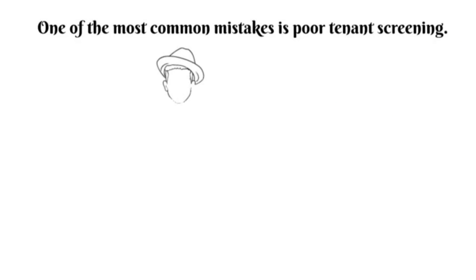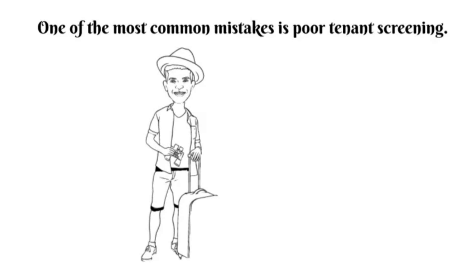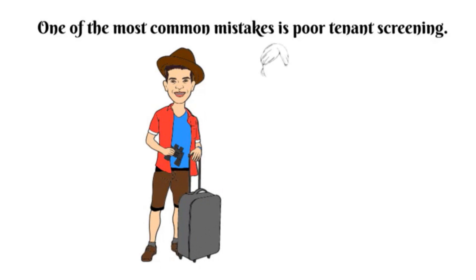One of the most common mistakes is poor tenant screening. Airbnb does this for you by offering an option that is only available if you have cleared a background check. But, it's up to the host to make sure that they approve that and select that as one of their criteria.